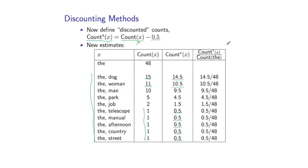And we can again define estimates now based on the ratio of the discounted count to the number of times we've seen the word there. So, for example, we now have 14.5 out of 48 as the estimate for the probability of dog given there. Or 0.5 out of 48 for the probability of country given there. So, notice we've essentially lowered each of these estimates through these discounting methods.